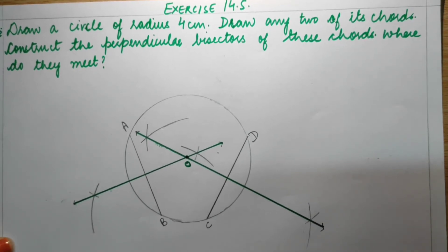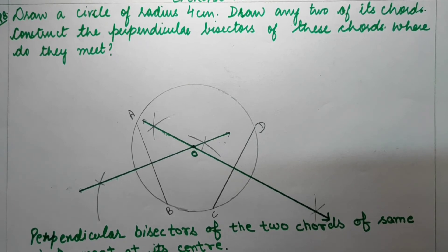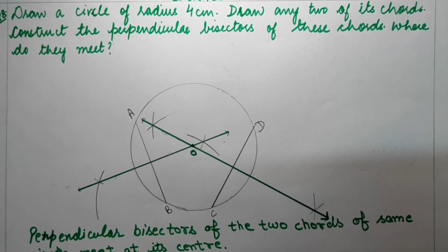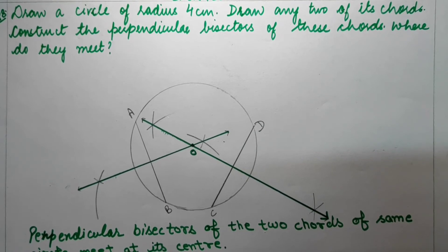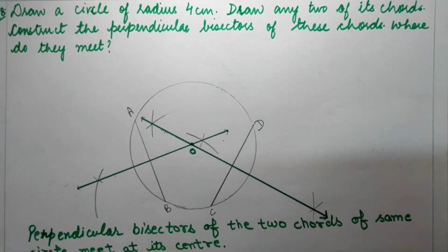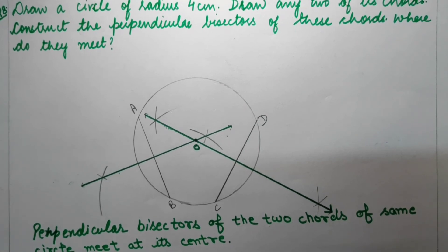Write down your answer like this: the perpendicular bisectors of the two chords of the same circle meet at its centre. This is true for any circle of any radius, and for any two chords of a circle. You can draw two chords anywhere in the circle, and if you draw the perpendicular bisectors they will definitely meet at the centre of the circle. This is the universal truth.